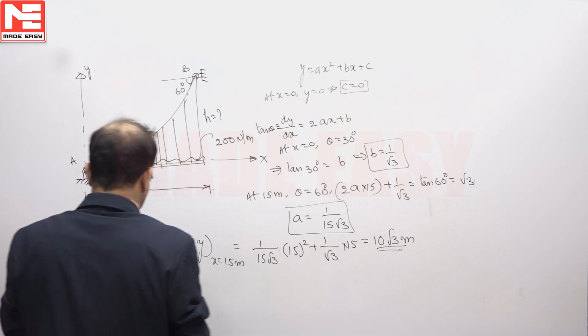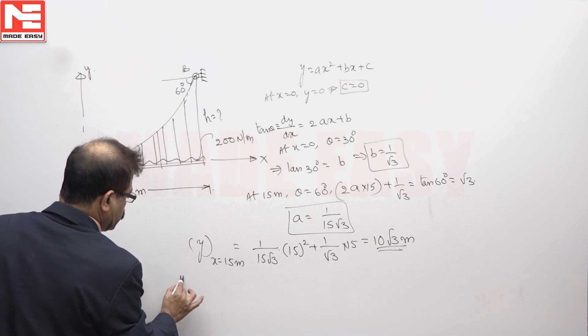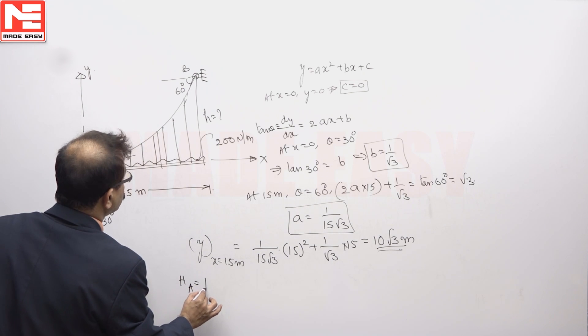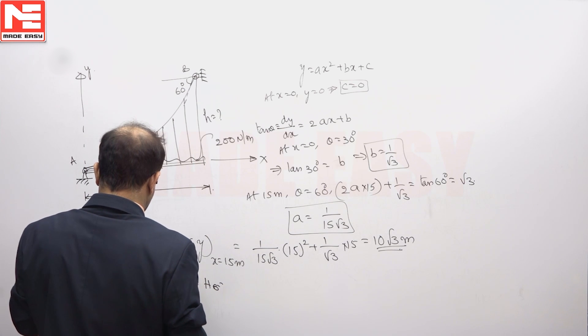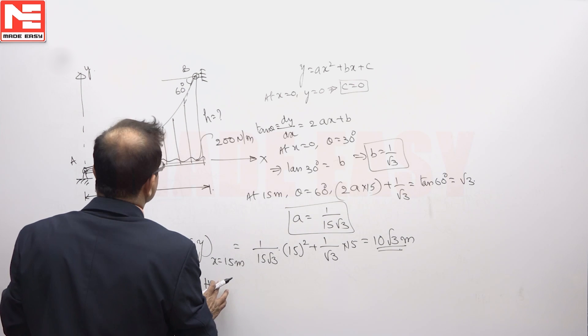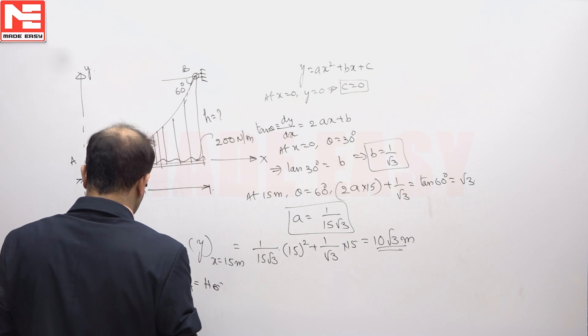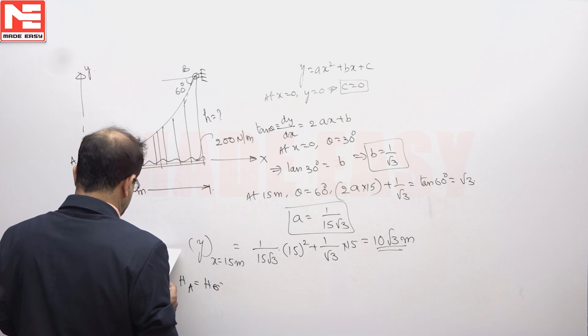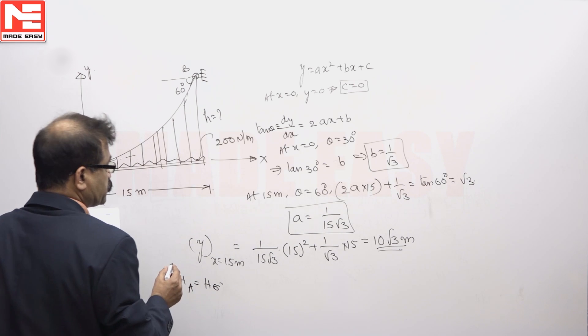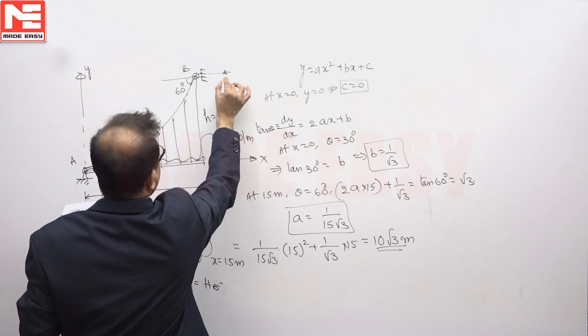Now horizontal thrust HA is equal to HB or H. HB is equal to T cos theta. Your H will be maximum at the highest point TB. So take moments of all forces about A equated to 0. This is HB.